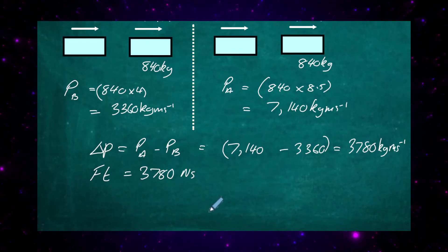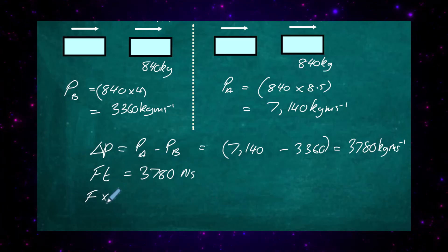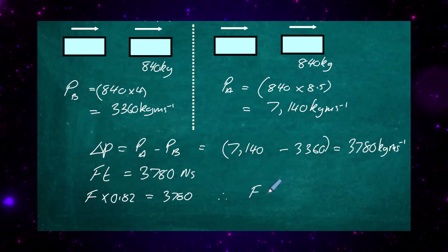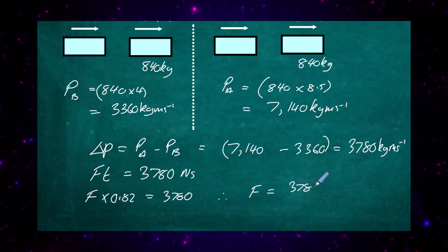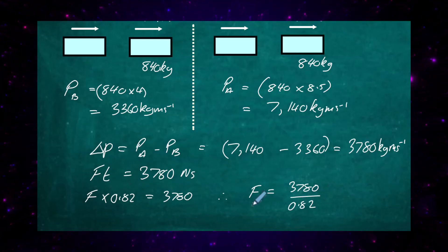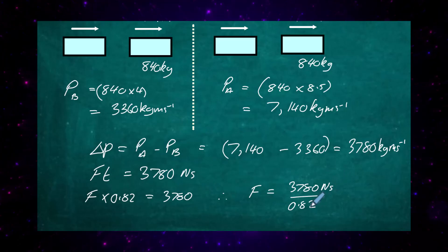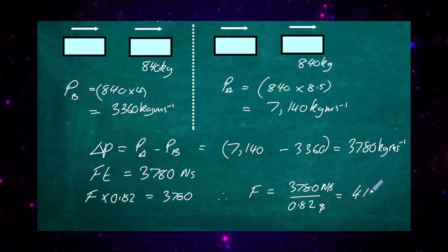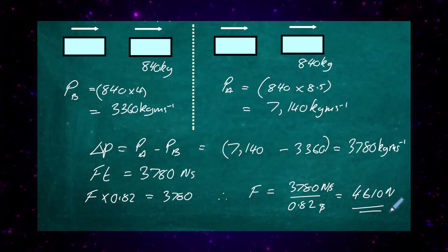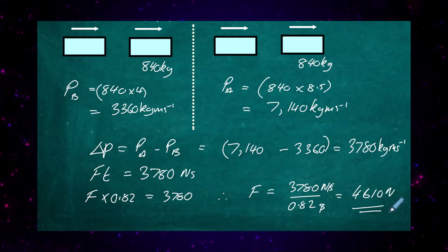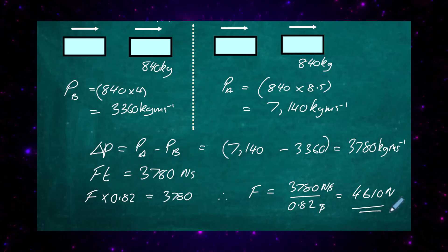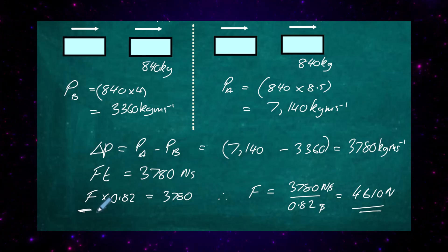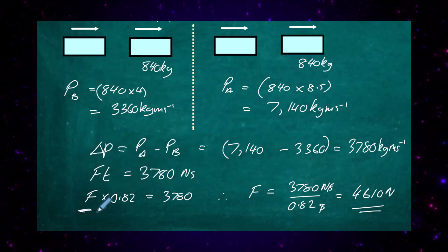The cars were in contact for 0.82 seconds, so: F × 0.82 = 3,780. Rearranging: F = 3,780 / 0.82. Impulse is measured in newton seconds and time in seconds, so force is in newtons. This gives an average force of 4,610 newtons. We call it the 'average' force because during a collision the force changes throughout, so we take the average — this is the average force exerted on car Y by car X.